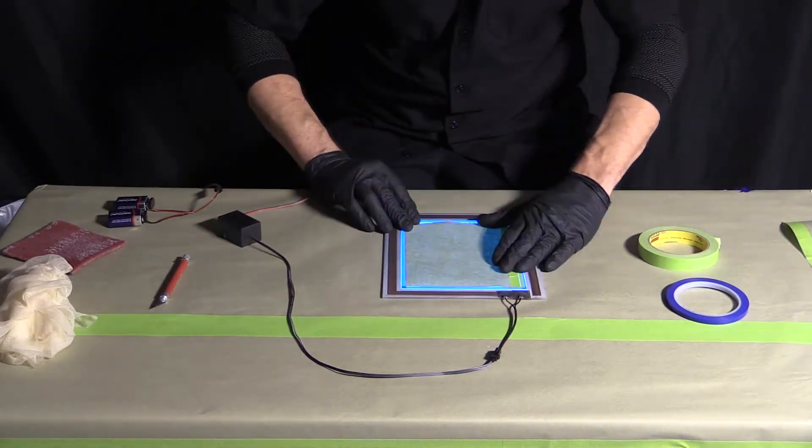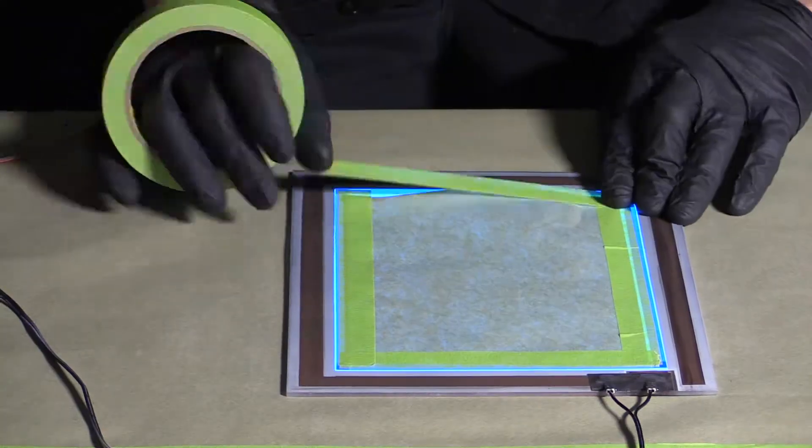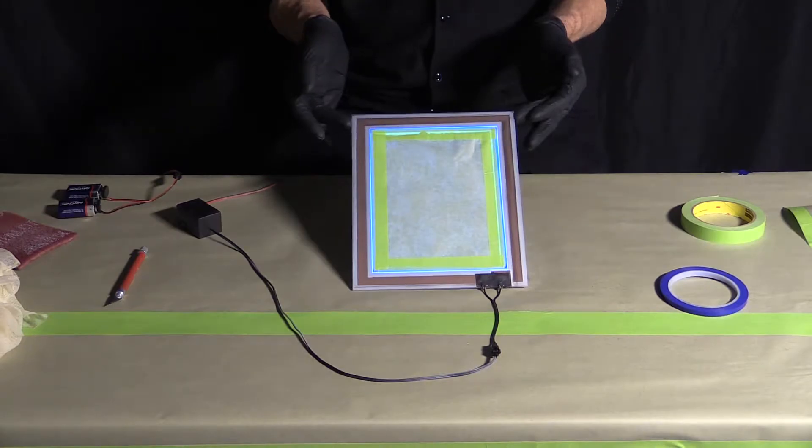Once the entire perimeter of the light is taped off, fill in the illuminated area with masking paper as this area will not be covered up by the blackout when sprayed.